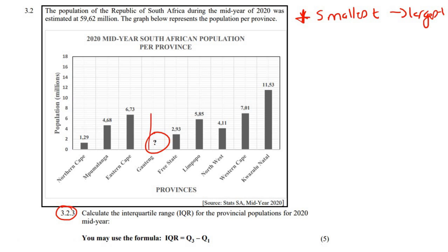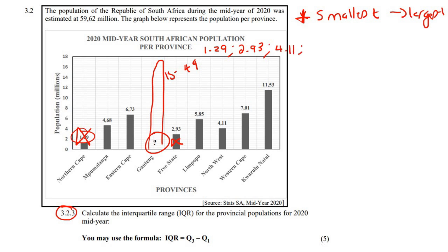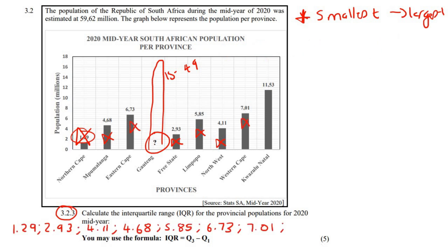Remember Gauteng is the largest at 15.49 million. So we need to order from smallest to largest. Smallest is Northern Cape: 1.29. Then Free State: 2.93. Then Northwest: 4.11. Then Mpumalanga: 4.68. Then Limpopo. Then Eastern Cape: 6.73. Then Western Cape: 7.01. Then KwaZulu-Natal: 11.53. And then Gauteng: 15.49.